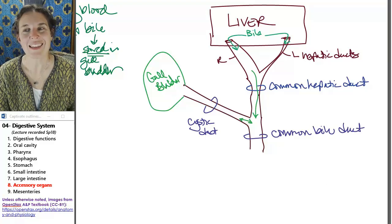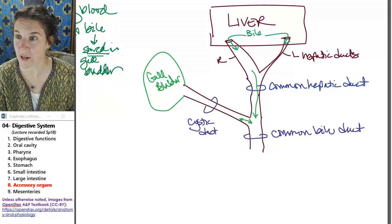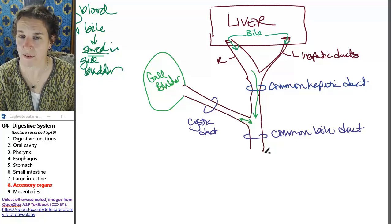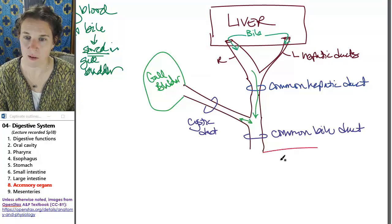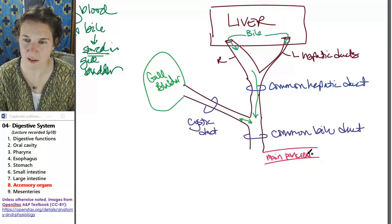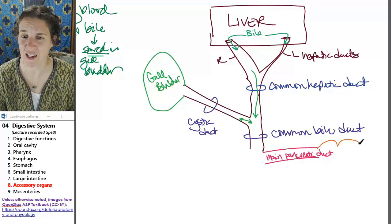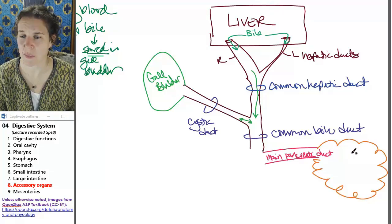The common bile duct combines or joins with the main - this is its name - pancreatic duct. That's a good name. I don't know why. It's a gland, so it's kind of puffy. This is the pancreas.